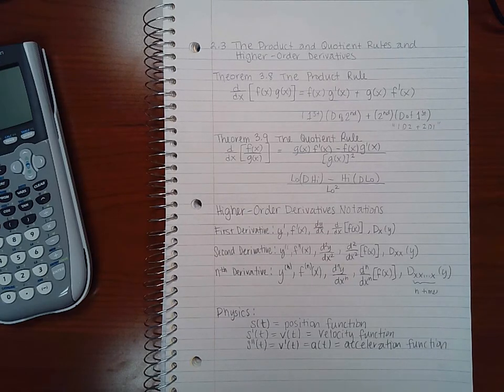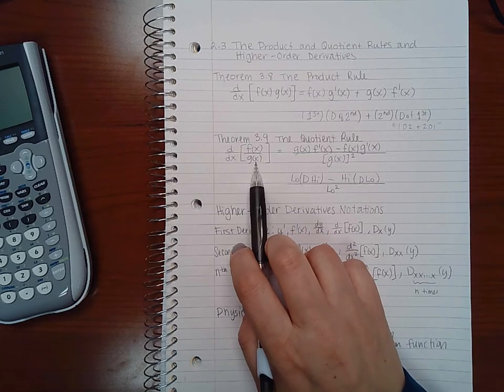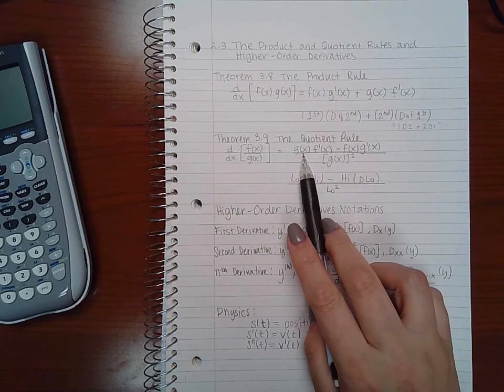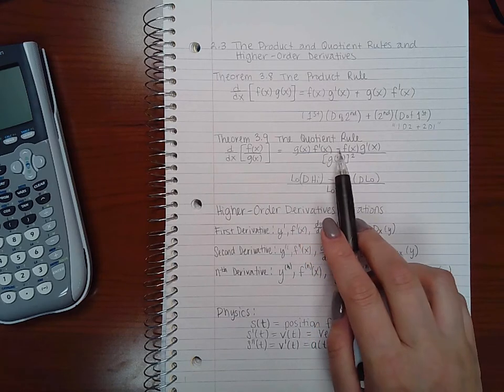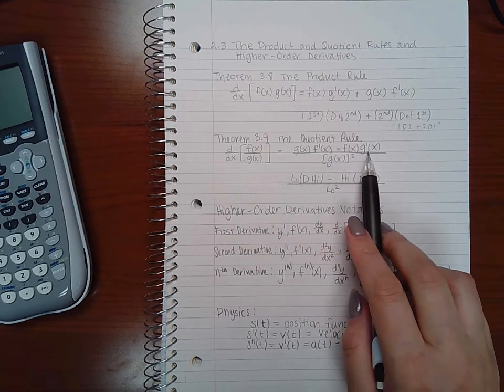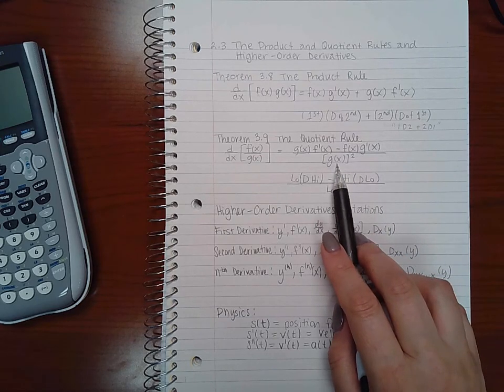Now for theorem 3.9, that's called the quotient rule. So if you have a function divided by another function, you can take the bottom function times the derivative of the top function minus the top function times the derivative of the bottom function over the bottom function squared.